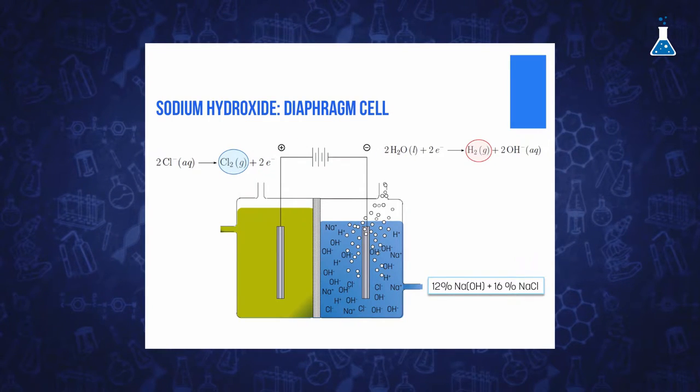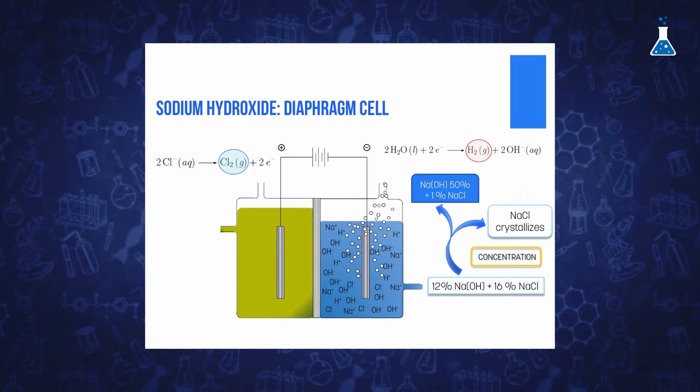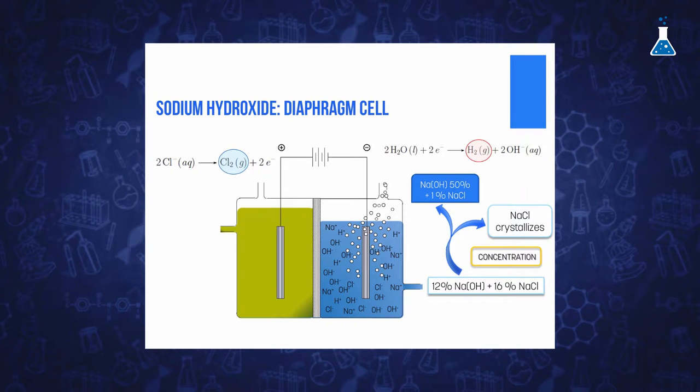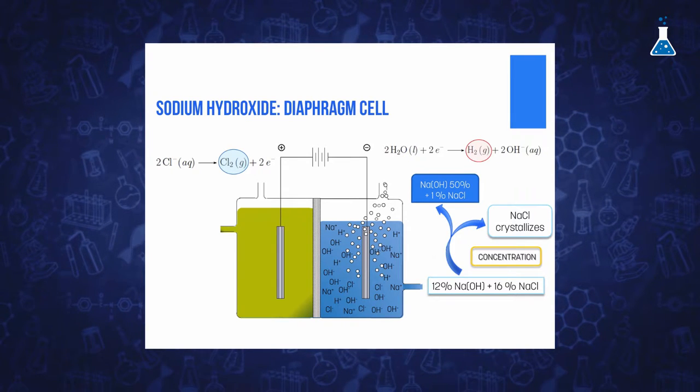The solution in the cathode is evaporated to one-fifth of its original volume, which leads to the precipitation of sodium chloride given its lower solubility and is subsequently filtered off. The resulting solution is 50% sodium hydroxide and 1% sodium chloride, which is enough for many purposes.